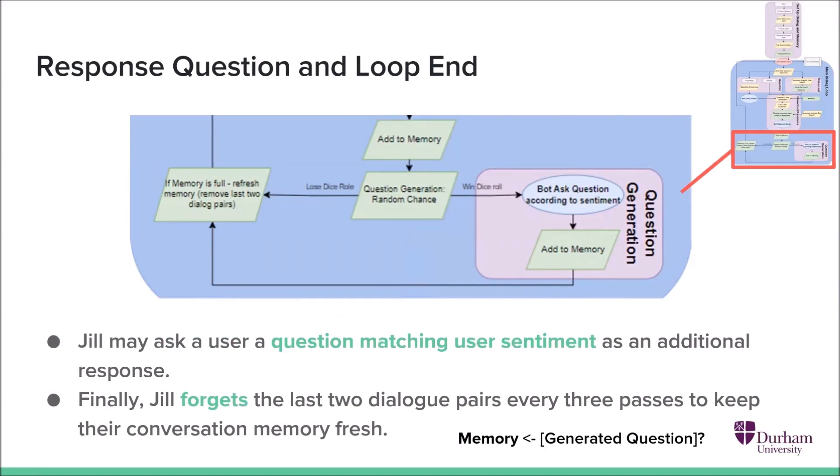This Jill-human dialogue pair is added to memory. And finally, there is a small chance that Jill may ask a question in response. And this is pulled from a bank corresponding to the sentiment of the user at that point. So for example, if the user has a positive sentiment, Jill may ask, what do you like about X?